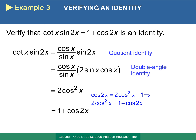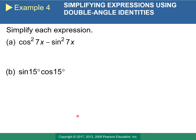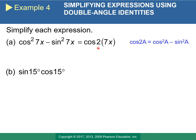In the next example we simplify expressions by recognizing which identity applies. For part (a), cos²(7x) − sin²(7x) looks like the first form of the cosine double angle formula cos²a − sin²a = cos(2a), where a = 7x. So this rewrites as cos(2·7x) = cos(14x). Final answer: cos(14x).